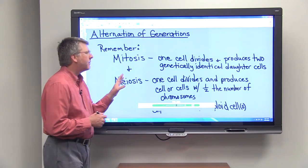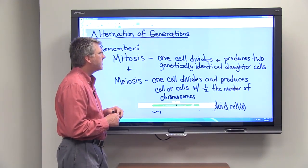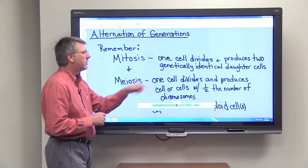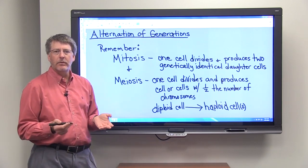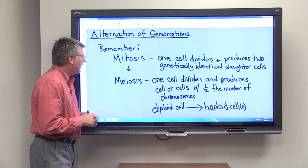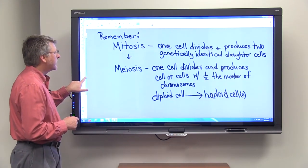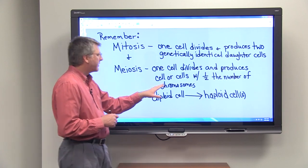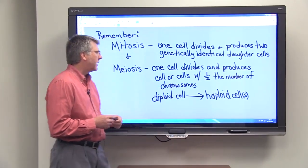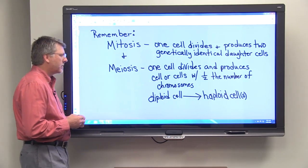Mitosis is a type of cell division in which one cell divides and produces two genetically identical daughter cells. So this is what growth and repair is all about. Now meiosis is different in that one cell will divide and it will produce a cell or cells, but the daughter cells have half the number of chromosomes.